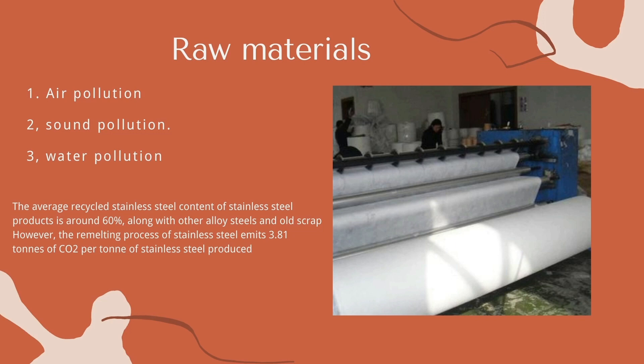Once the raw material acquisition stage is complete, the primary raw material must be transformed into a secondary raw material that can be used to produce umbrellas. Throughout the manufacturing process, significant greenhouse gas emissions are produced. Of the secondary raw materials used in umbrellas, stainless steel can be considered the least wasteful. Stainless steel production is well interwoven with its recycling process — the average recycled stainless steel content is around 60%. However, the production of stainless steel still emits 3.81 tons of carbon dioxide per ton produced.